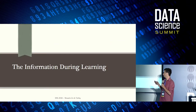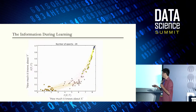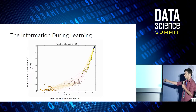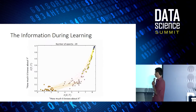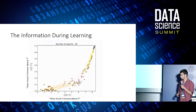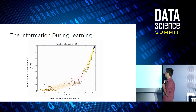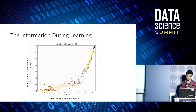What we actually did is look at this information in real networks. We have something we call the information plane: the X axis is the information with the input, and the Y axis is the information with the labels. We took a simple deep network with six layers and did 50 random initializations. Each one of the colors is a different layer.